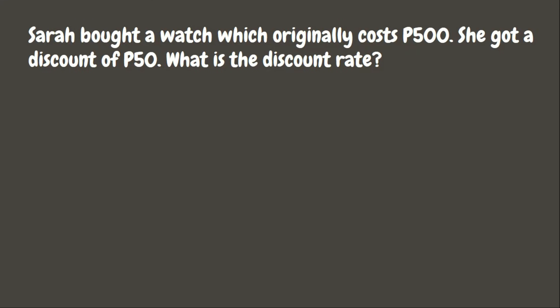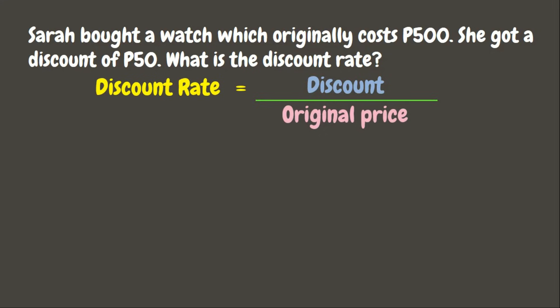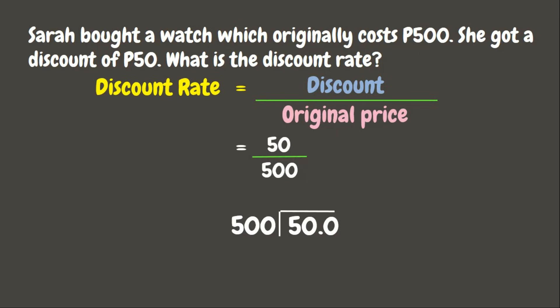Now let's have our last example. Sarah bought a watch which originally cost 500 pesos. She got a discount of 50 pesos. What is the discount rate? This time we are looking for the percent of discount. To get the discount rate, we need to divide the discount by the original price. The discount is 50 pesos divided by the original price of 500 pesos.